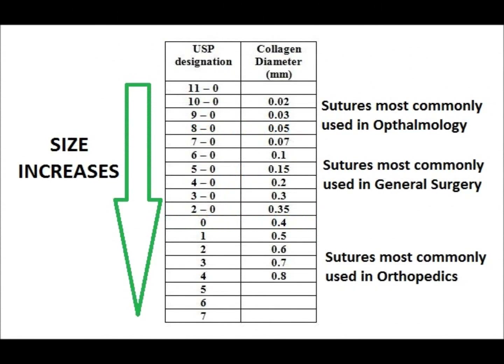Sutures come in various sizes. The suture size means the diameter of the material. The more zeros in the number, the smaller the size of the strand. As the number of zeros decrease, the size of the strand increases. Tensile strength is an important factor in sutures. It's measured by the force in pounds that the suture strand can withstand before it breaks. The rule of thumb is that the suture strand should be as strong as the tissue it's being used on.